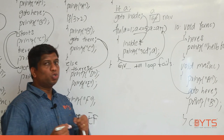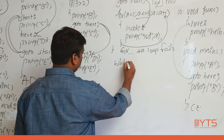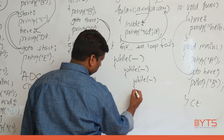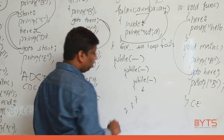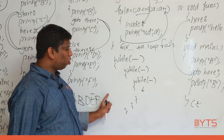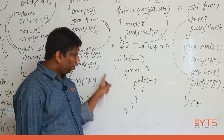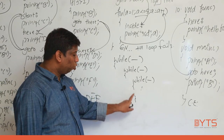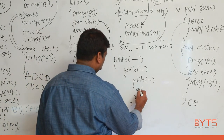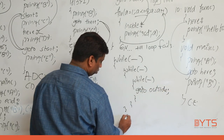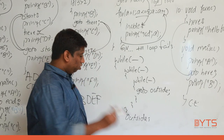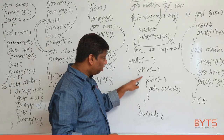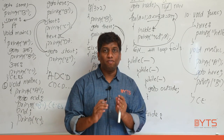So in which scenario should you use goto? Consider deeply nested loops — while inside while inside while. If you are deep inside and want to come out of all three loops at once, break only exits the nearest loop. With goto, you can write a label outside all the loops and jump directly out. That is the one practical use case for goto: escaping out of multiple nested loops at once. This is why goto is a very rarely used keyword in C.